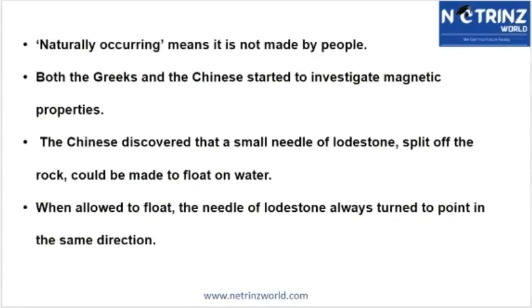Naturally occurring means something already present in nature and not man-made. The loadstone rock was already present in nature — Magnus simply discovered it. When he was looking after his sheep, he found that this rock had a force of attraction towards metal. The rock was magnetite, a naturally occurring magnet, not made by humans.